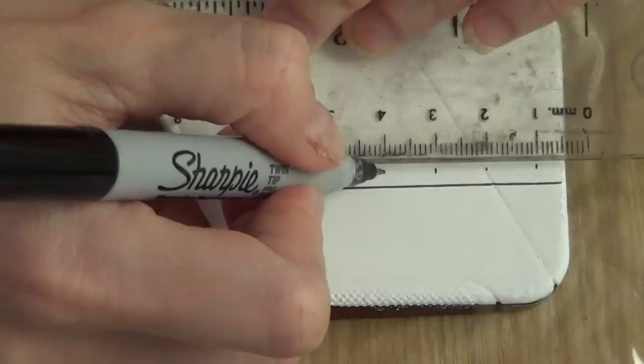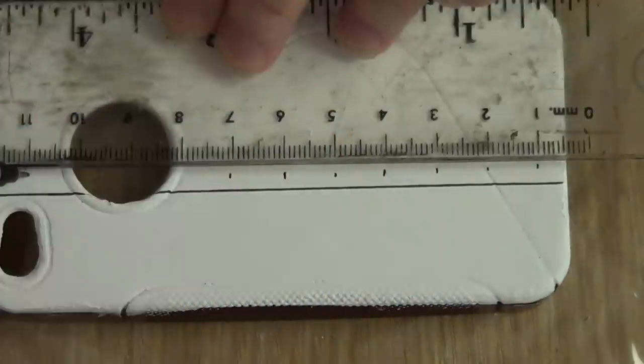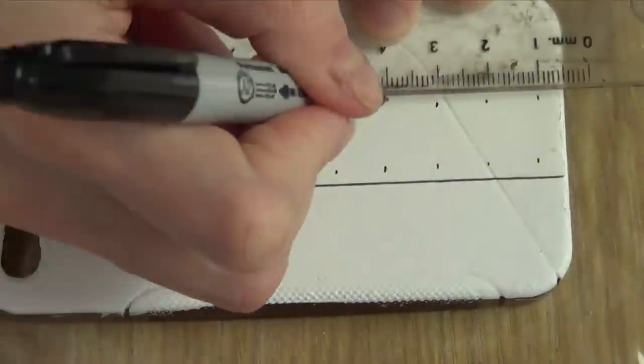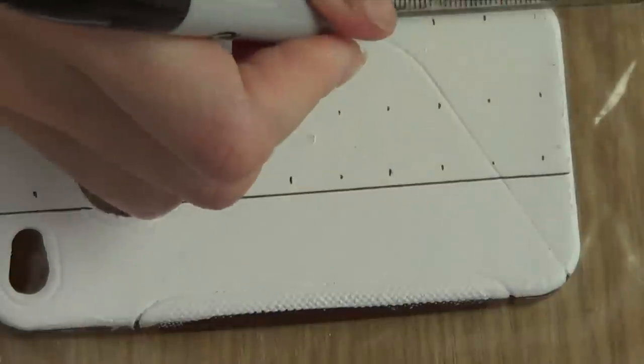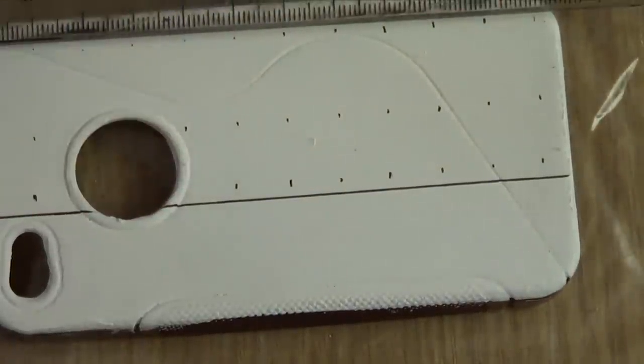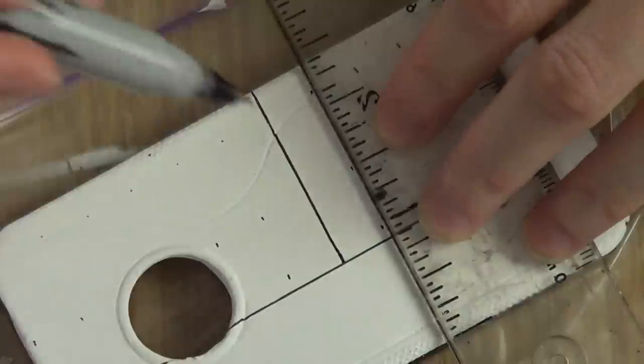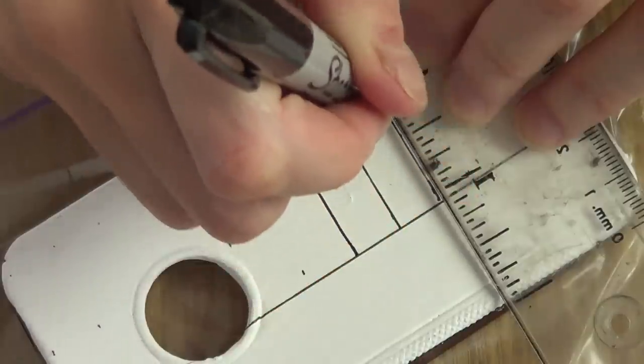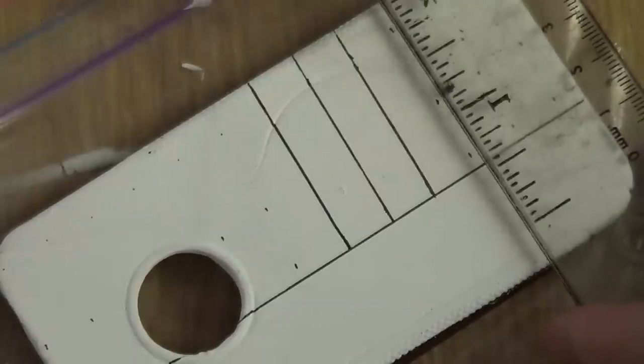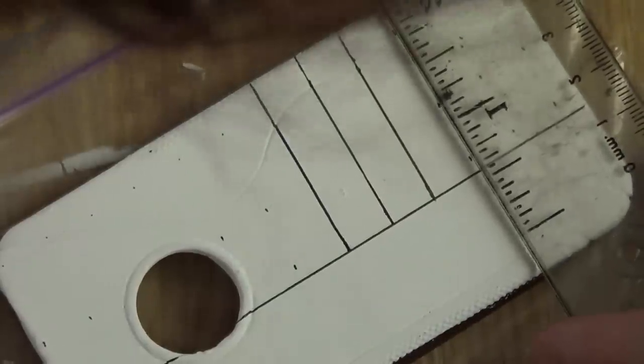Then I took my ruler again and placed it on the top of my case, and I marked every centimeter from that ruler, just marking that. I did that three times. Once I had all my little marks in there, I just went with my ruler again and gathered all the marks to make as straight lines as I could.